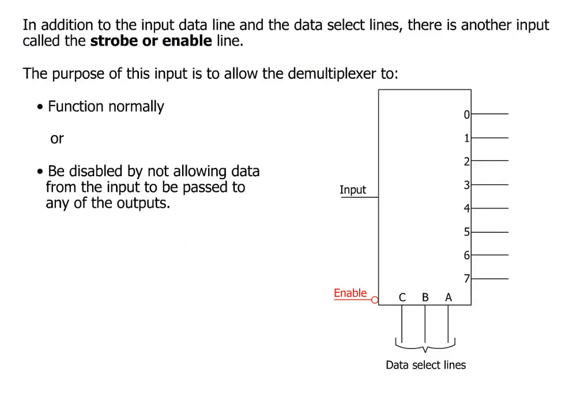In addition to the input data line and the data select lines, there is another input called the strobe or enable line. The purpose of this input is to allow the demultiplexer to function normally or be disabled by not allowing data from the input to be passed to any of the outputs.